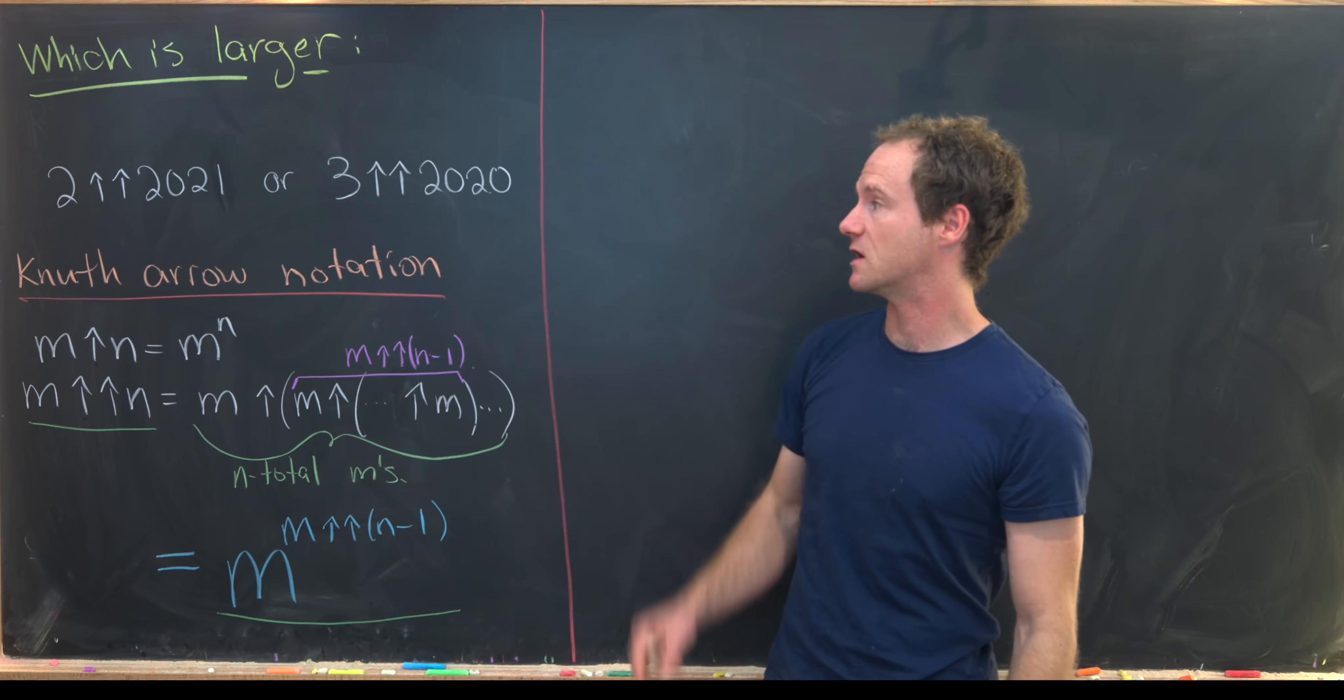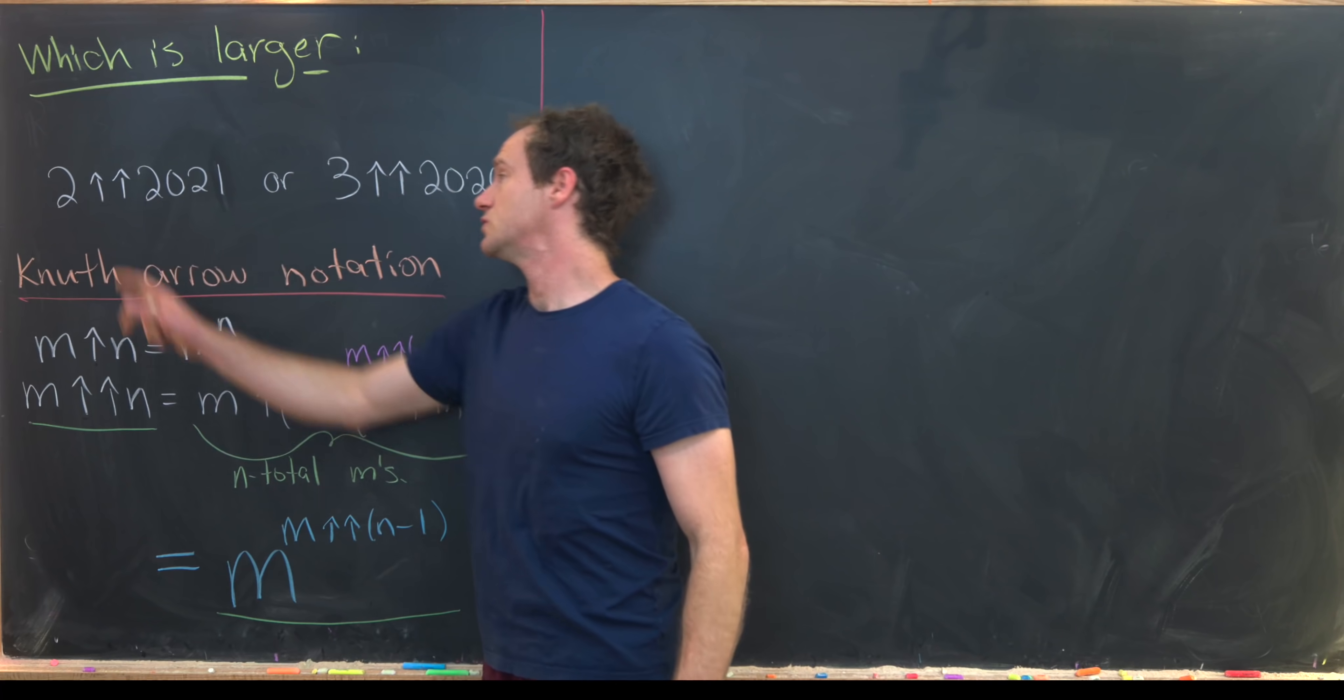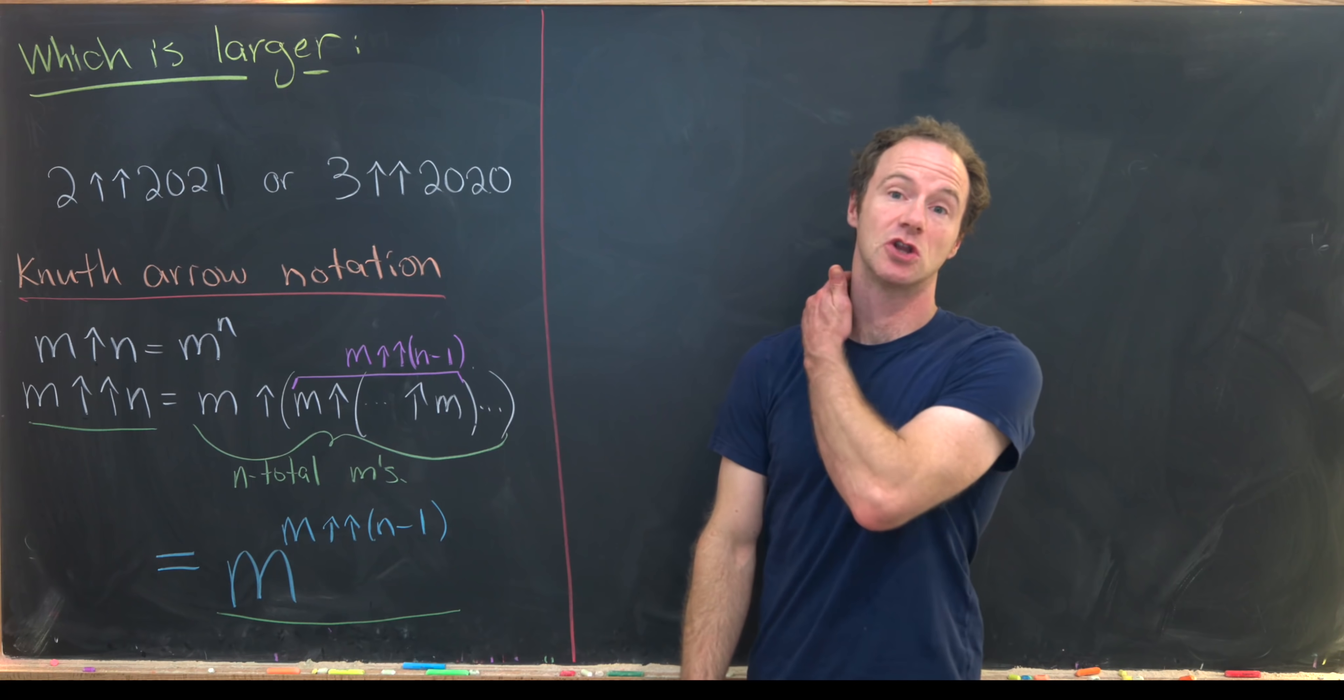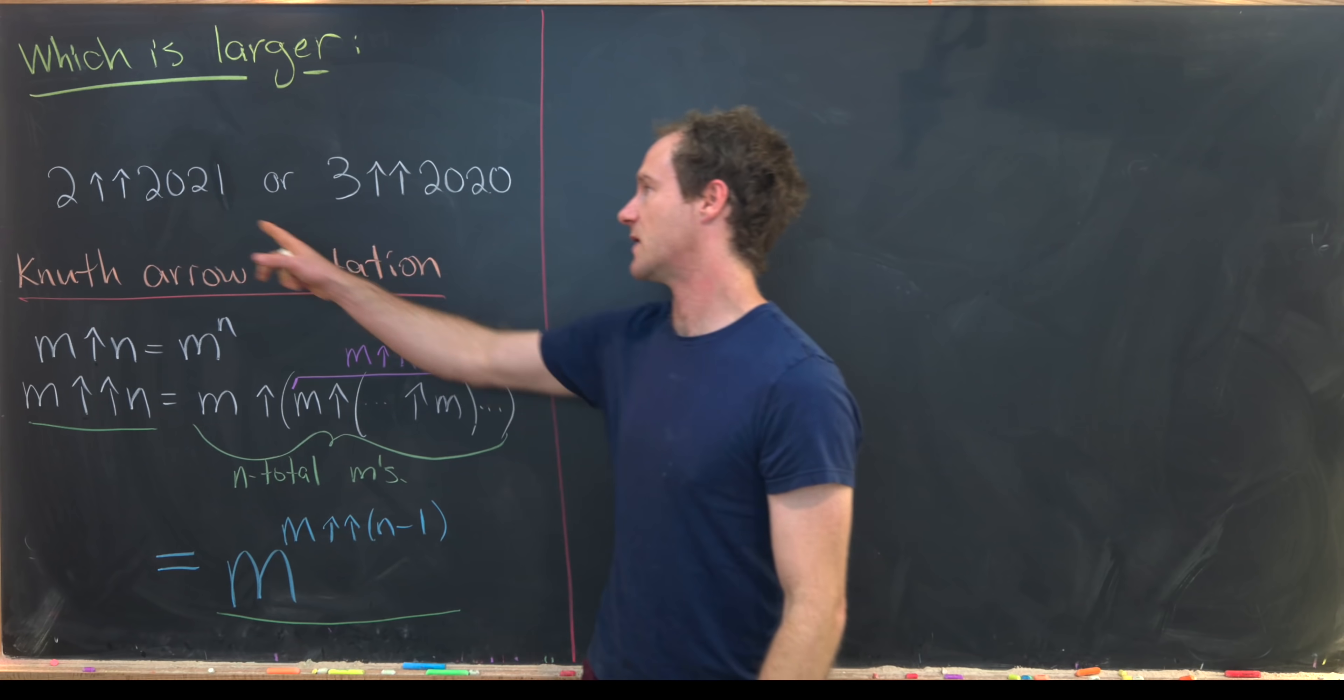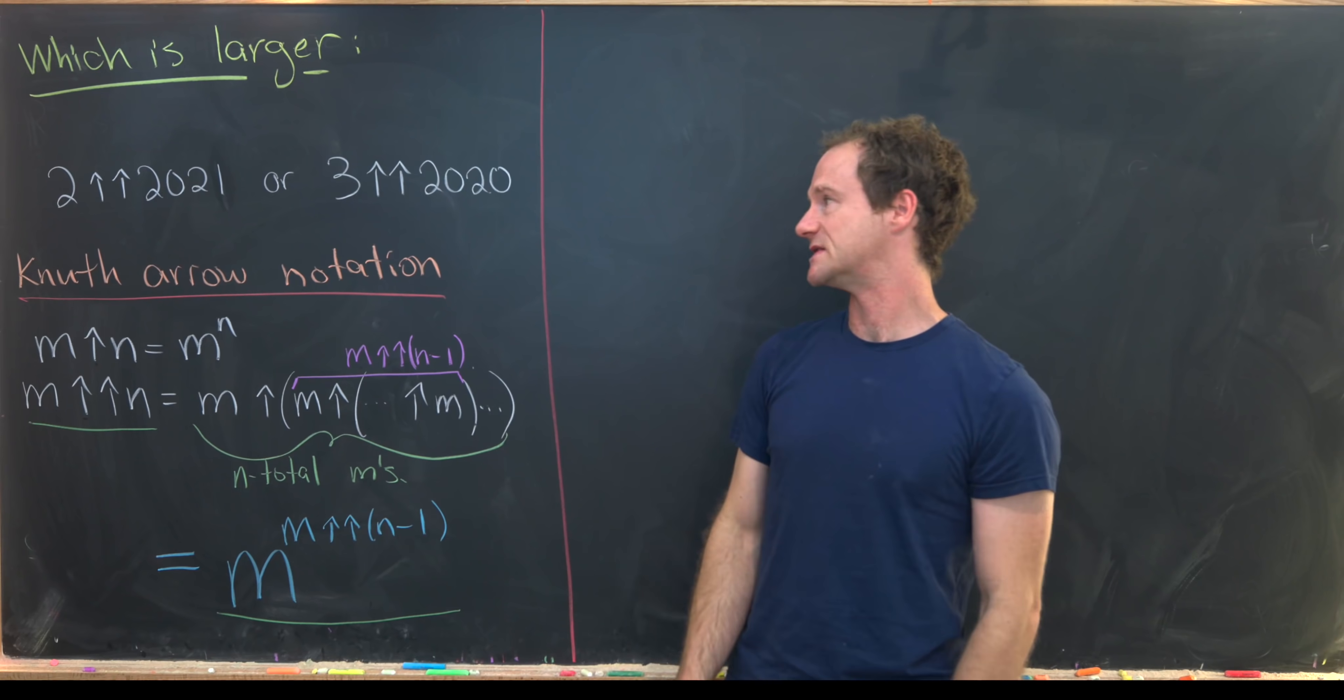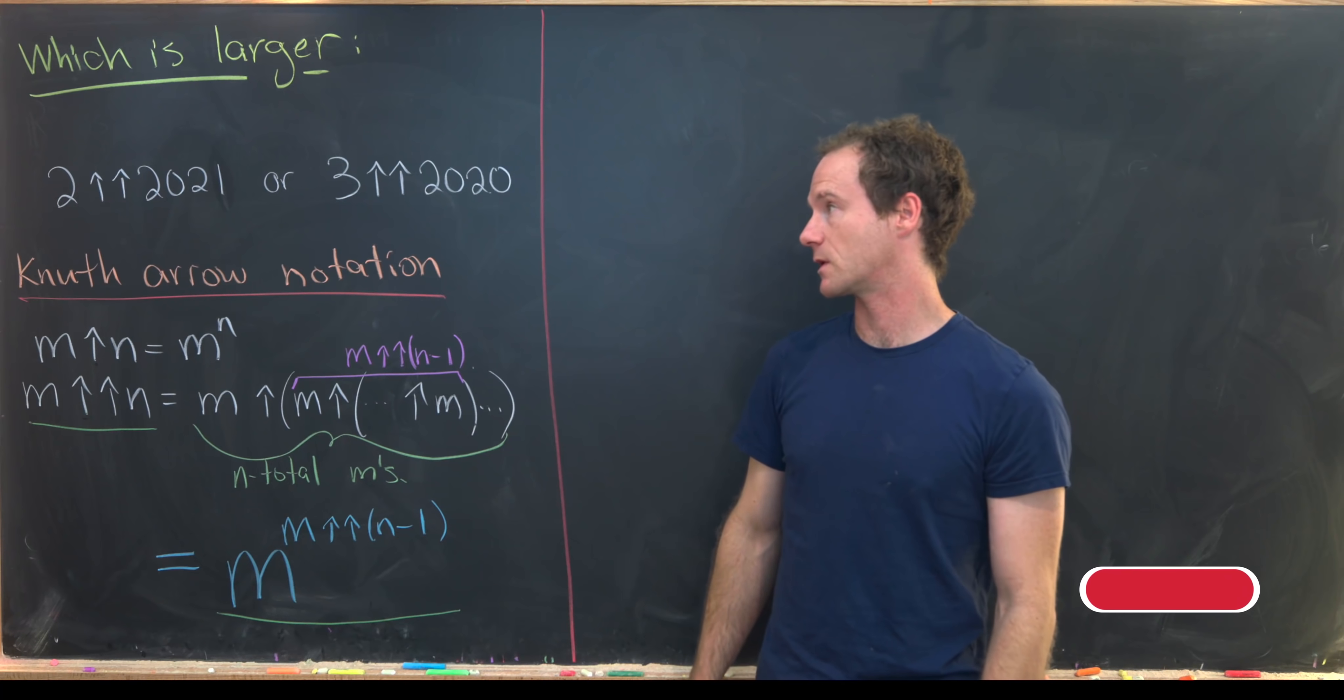We're just going to hone in on this question which is is 2 to the double up arrow 2021 or 3 double up arrow 2020 larger. So notice here the 2020 is obviously smaller than the 2021 but the 3 is larger than 2. So what wins out? The largeness of the second number or the largeness of the first number?